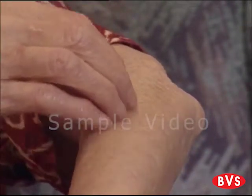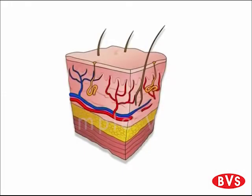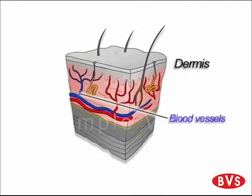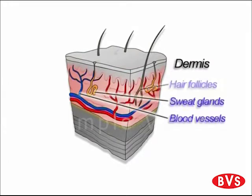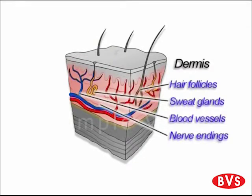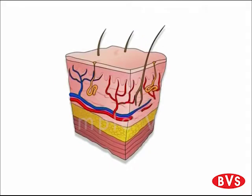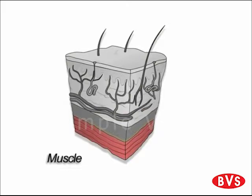Below the epidermis there is another layer which is called the dermis. The dermis is the living part of the skin that contains blood vessels, sweat glands, hair follicles and nerve endings. The dermis is four times the thickness of the epidermis. It has the ability to expand and contract, for example during pregnancy. Below the dermis is a layer of fat that provides us with padding and insulation. If we go even deeper than the dermis then we find muscle tissue and under that there is bone.